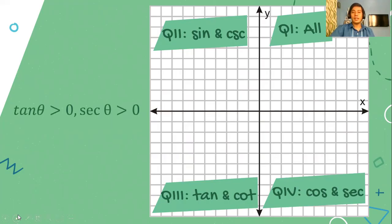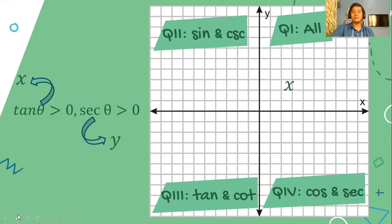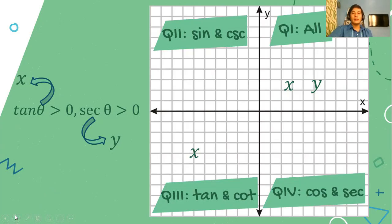Let's have another example. Tangent theta is positive and secant theta is positive. Tangent theta is positive on quadrant one and quadrant three. For the secant function, which is also the reciprocal of cosine, it is positive on the first quadrant and also positive on the fourth quadrant. The intersection of these two conditions is quadrant one. So P of theta is located on the first quadrant.